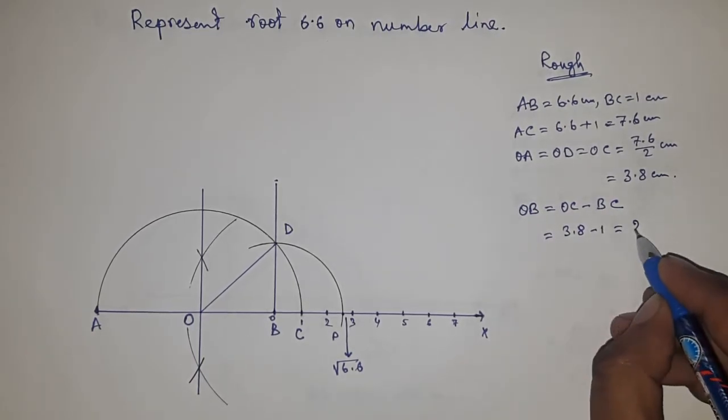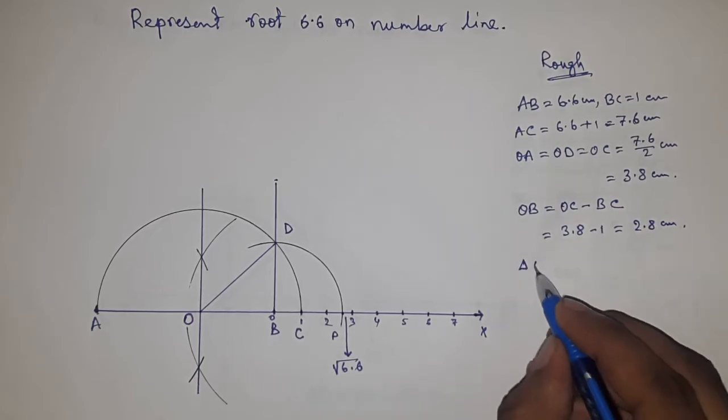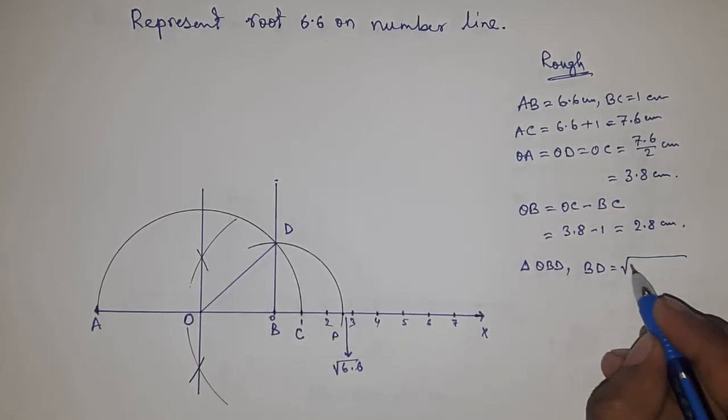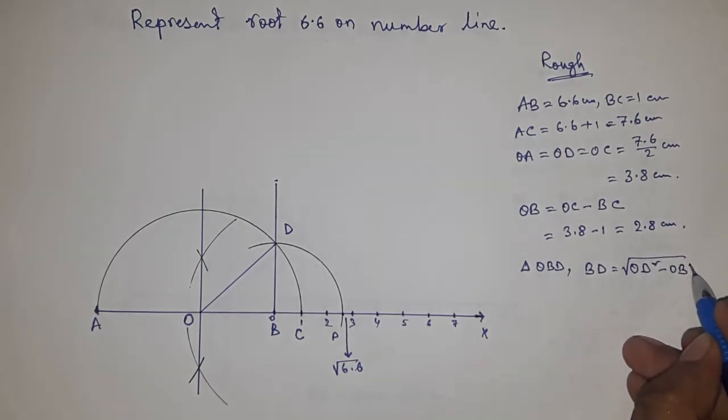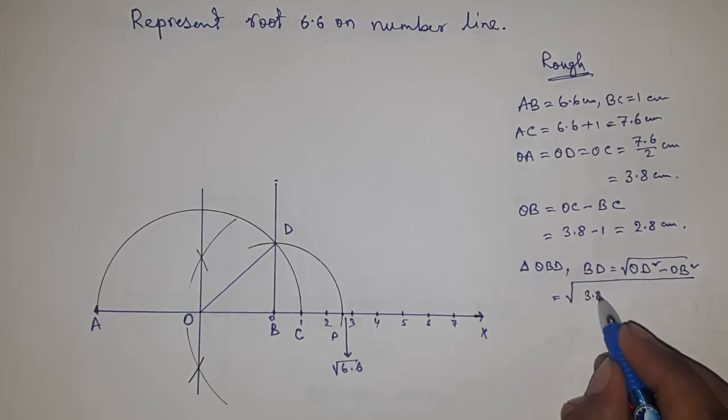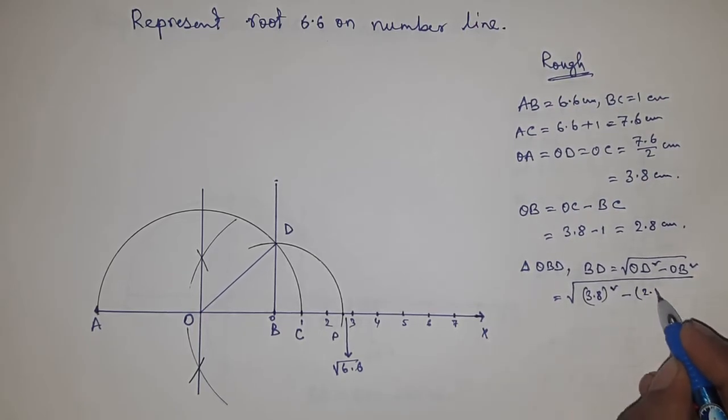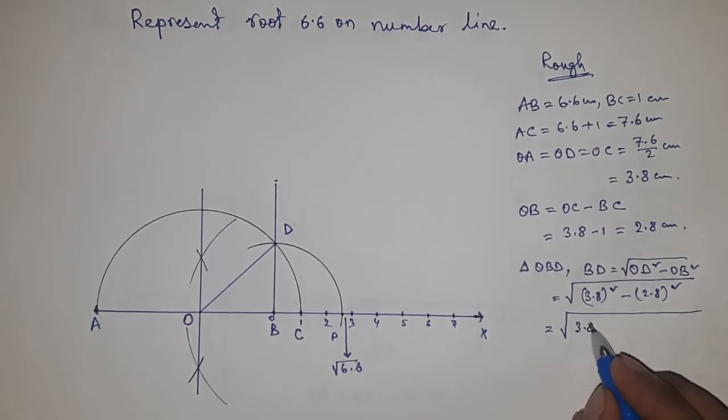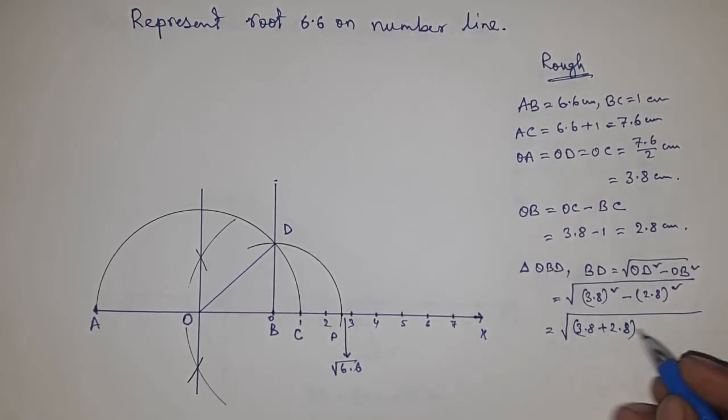In the right angle triangle OBD, we can write BD equals the square root of OD squared minus OB squared. Putting the value of OD and OC, next applying the formula a squared minus b squared equals (a plus b)(a minus b).